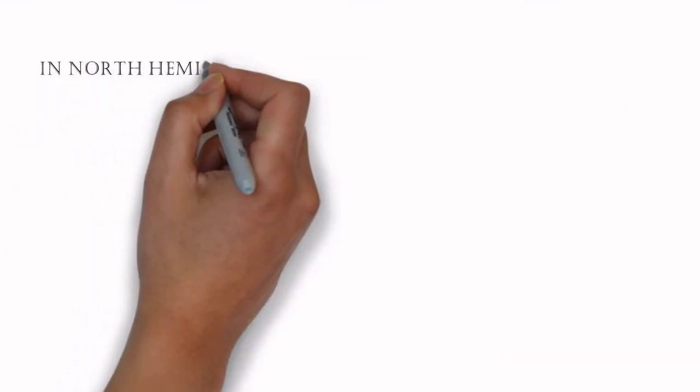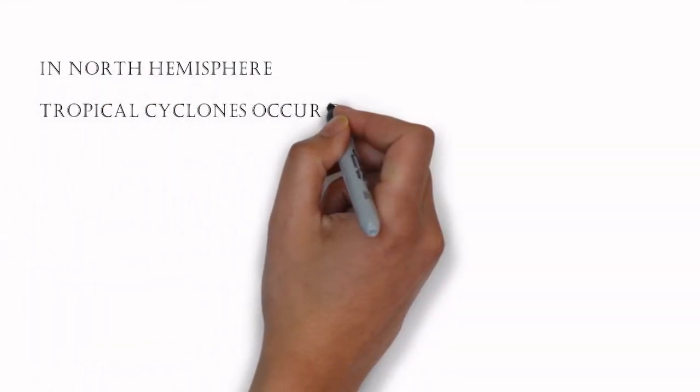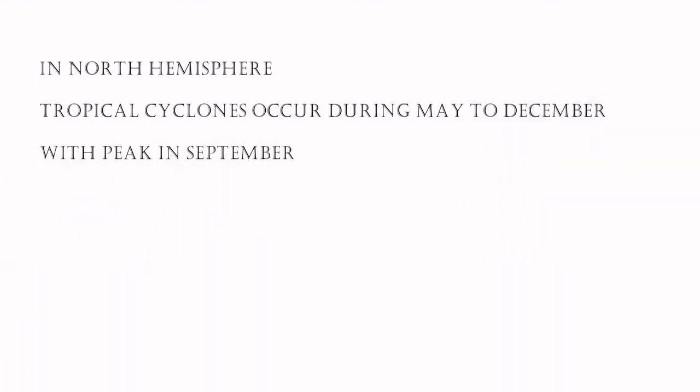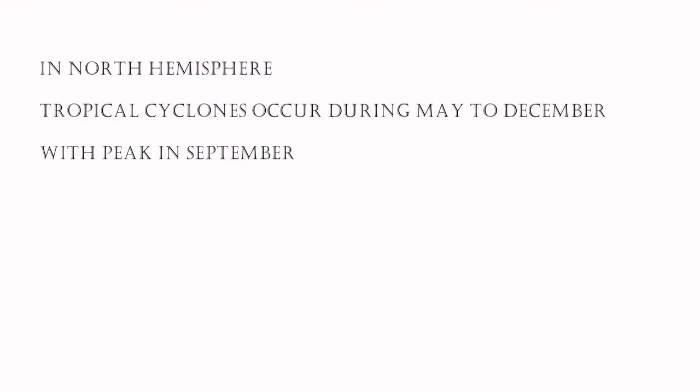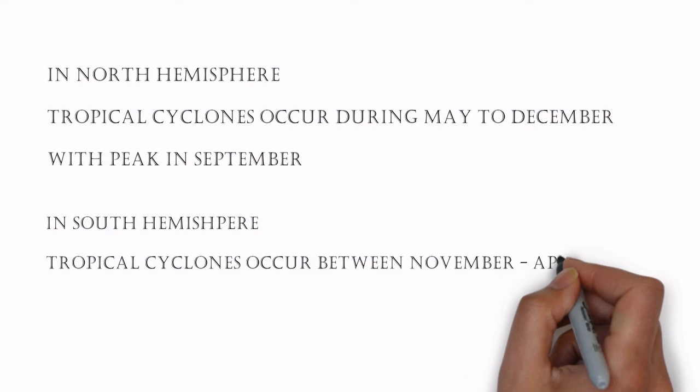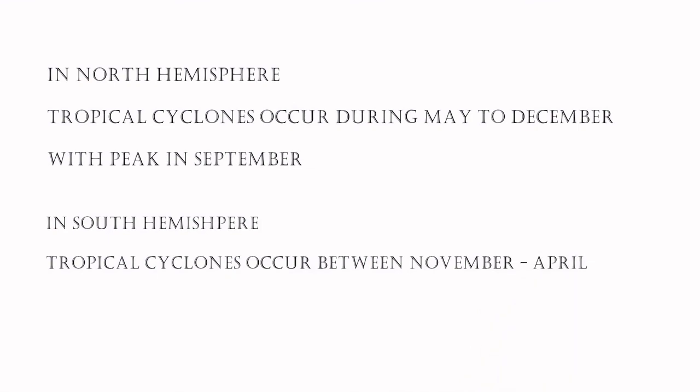When do they occur? Tropical cyclones in the North Atlantic Ocean occur between May and November with peak in September in the Northern Hemisphere. In the Southern Hemisphere, tropical cyclones occur between November to April.